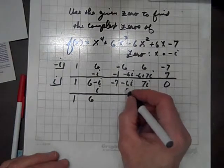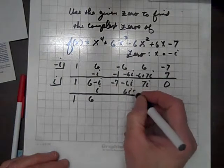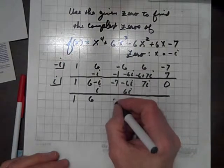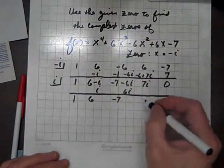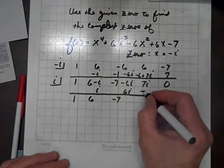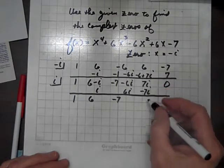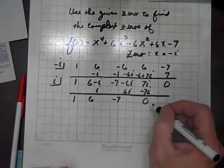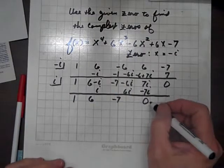Multiply times i, and we get 6i. Add up, and the 6i's add out, and we get negative 7. Multiply times i, and we get negative 7i. Add, and there's our zero in the remainder position.